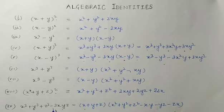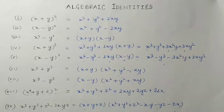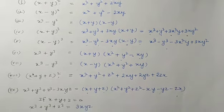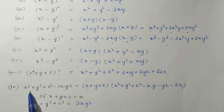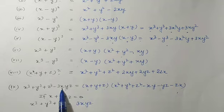The ninth identity: x³ + y³ + z³ - 3xyz = (x + y + z)(x² + y² + z² - xy - yz - zx). And as a special case of this identity, if x + y + z = 0, then the right-hand side becomes 0, so x³ + y³ + z³ - 3xyz = 0, which means x³ + y³ + z³ = 3xyz.